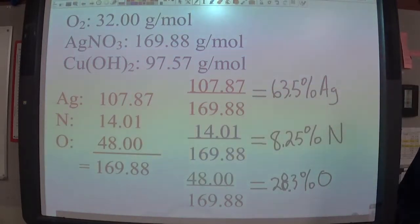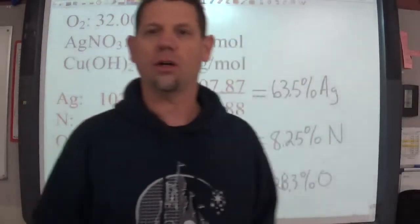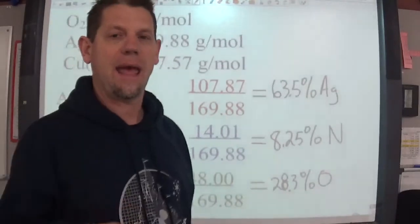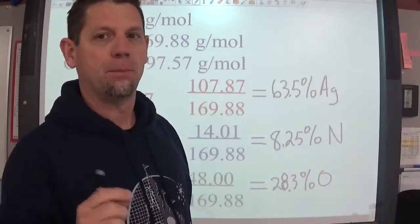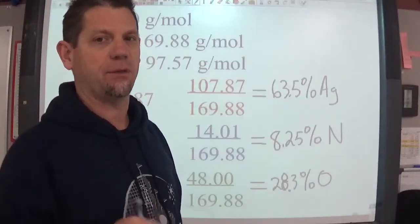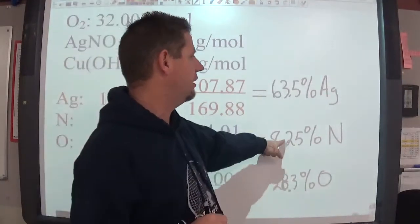So now to double check that you've done these correctly, all you have to do is go back through and add up your percentages. The problem is we rounded one of these to three significant figures and it added another decimal place.